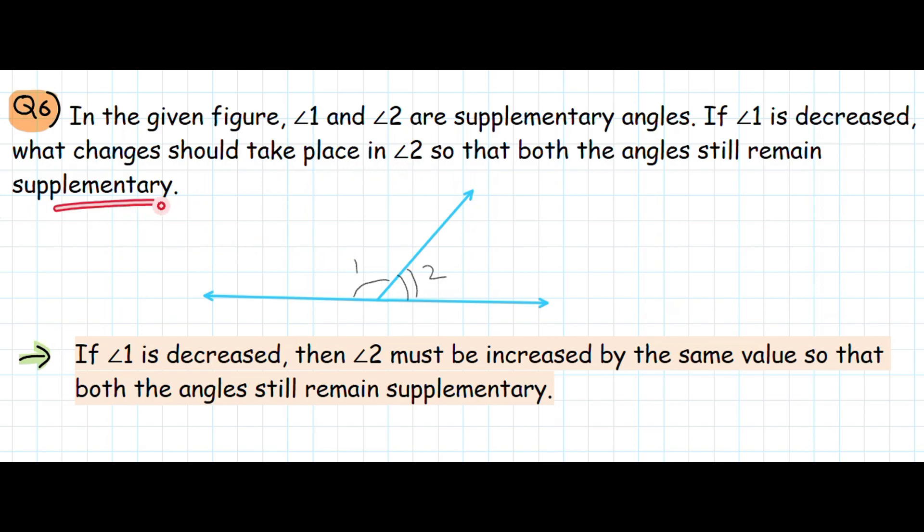The answer will be that if angle 1 is decreased, then angle 2 must be increased by the same value so that both angles still remain supplementary. If we decrease angle 1, then angle 2 should also increase by the same amount so that these angles are supplementary. Our question number 6 has been completed.